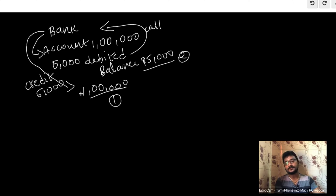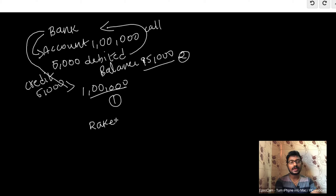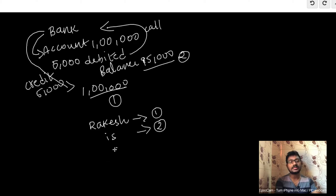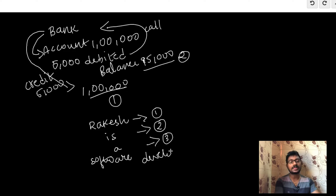Second example: if we use MS Word or MS Excel, we can type data. If we type the first word, we auto save — this is the first state. Then we type more and auto save — this is the second state. Then we type more and save — this is the third state. Then we copy and paste — this is the fourth state.